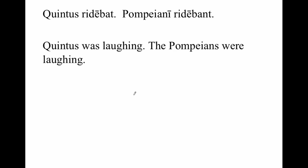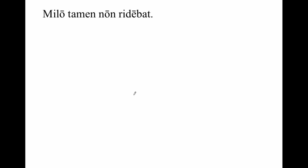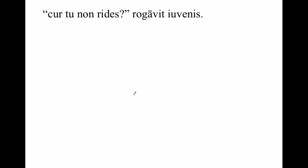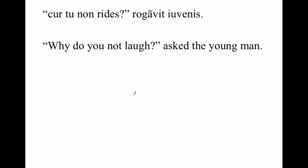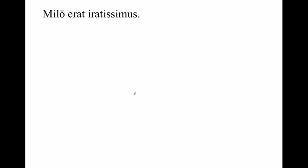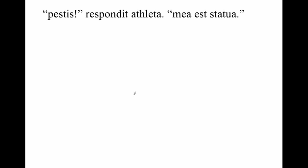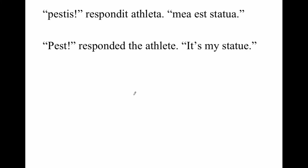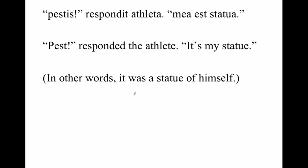Quintus was laughing. The Pompeians were laughing. Milo tamen non ridebat. Milo, however, was not laughing. Milo asked the young man. Milo erat iratissimus. Milo was very angry. Pestis, responded the athlete. Pest, responded the athlete. Mea est statua. It's my statue — that is to say, it was a statue of himself. Remember, they put up statues to famous athletes. He's one of them. And Quintus just broke the nose off the statue of Milo.